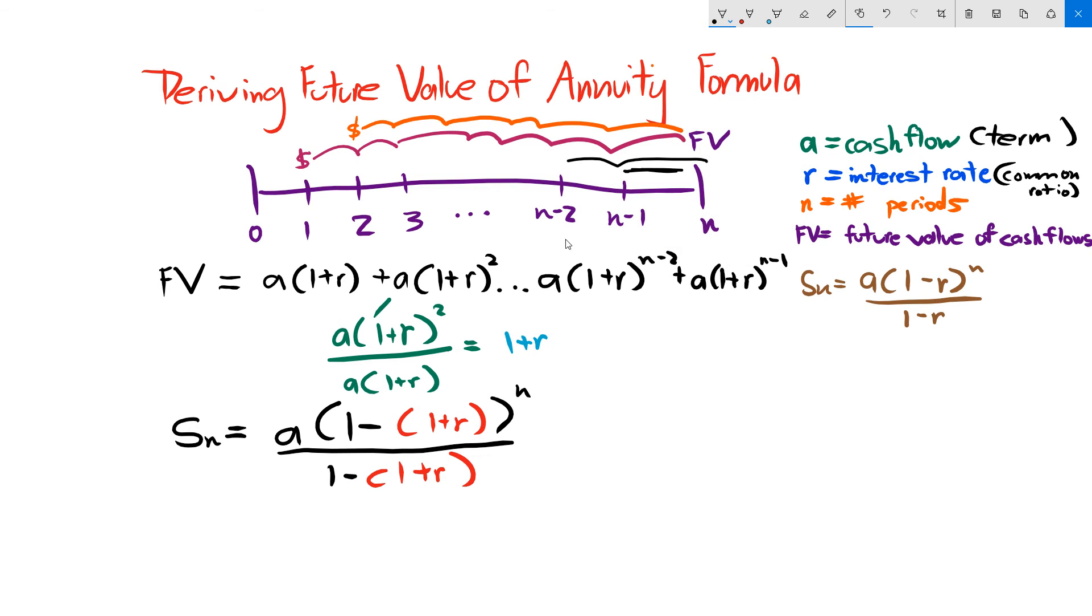So now we can simplify this a little bit, we can cross out some things here, we can see that the ones are going to cancel out, so we get 1 minus (1+r) to the n divided by, well that's going to cancel out. So we're going to have negative r, you don't really want to leave a negative on its own in the denominator, so we can times the bottom and the top by negative 1, so that's going to give us negative a.